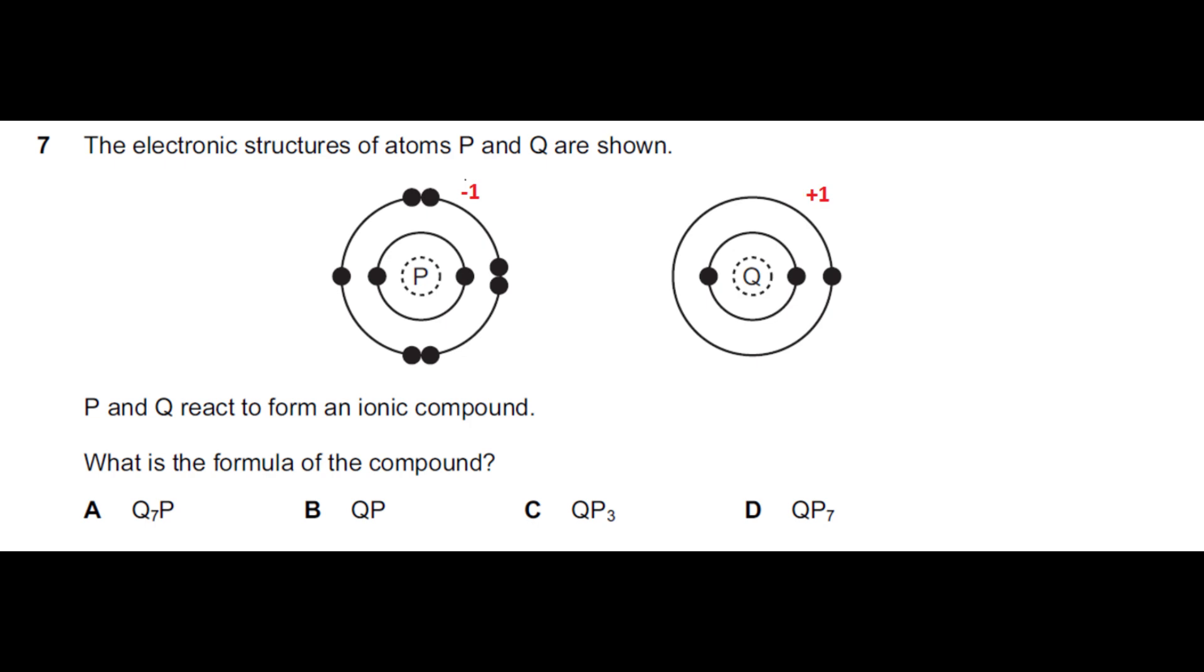So cation is Q and anion is P, so the answer should be QP which is Bravo. So Bravo is the correct answer for this question.